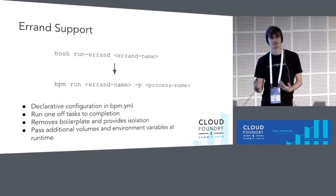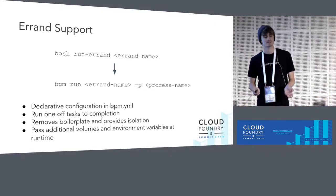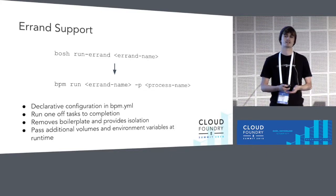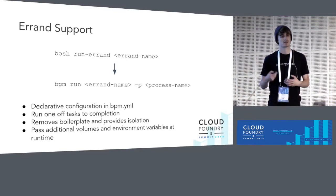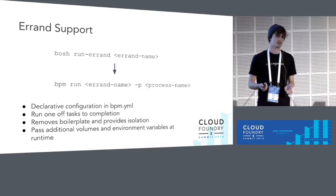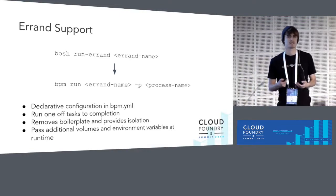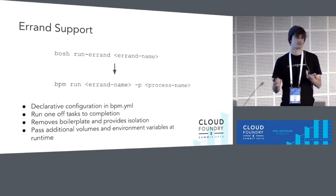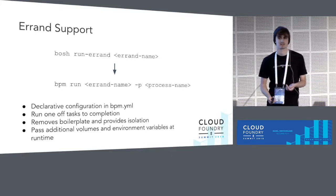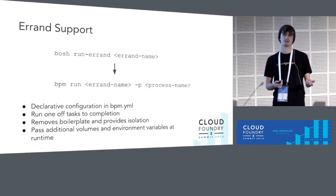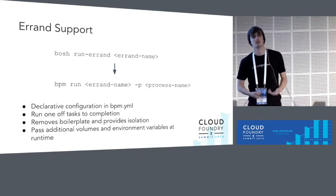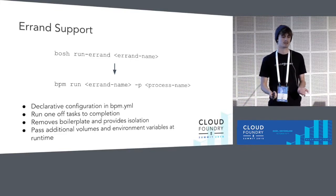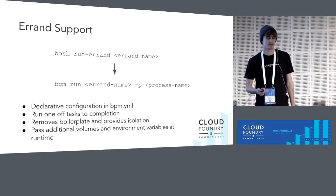One interesting thing we found implementing errands is that you don't always know all the configuration you need at deployment or template time. So we started exposing volumes and environment variables at runtime so jobs could take advantage of these aspects. The really common case is an errand wanting to tweak what it exposes depending on which jobs it's co-located with — that's difficult to determine in templates but really easy to determine at runtime.